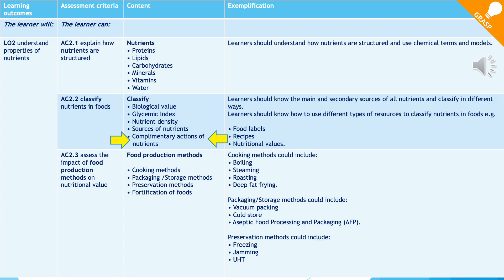For each learning outcome there's more detailed information. This is information about learning outcome 2 — to understand the properties of nutrients. What we're going to look at today is complementary actions of nutrients, which you have most likely heard of during your GCSE work.